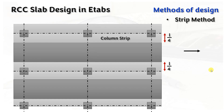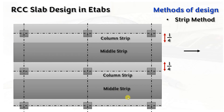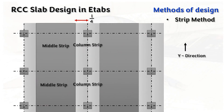You will have the middle strip, and again you will have the column strip. So the layout is: column strip, middle strip, column strip. In this way you have to divide your strips to design the slab using the strip method. Remember: the distance from the center of the column is L/4, where L is the shorter dimension of the slab. This is in the X direction, so in the X direction you divide like this.